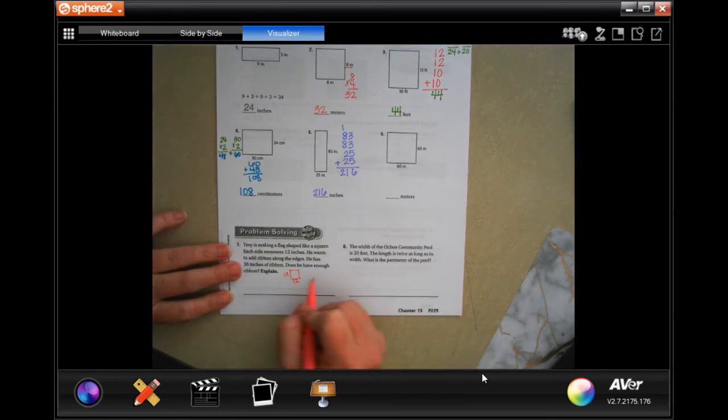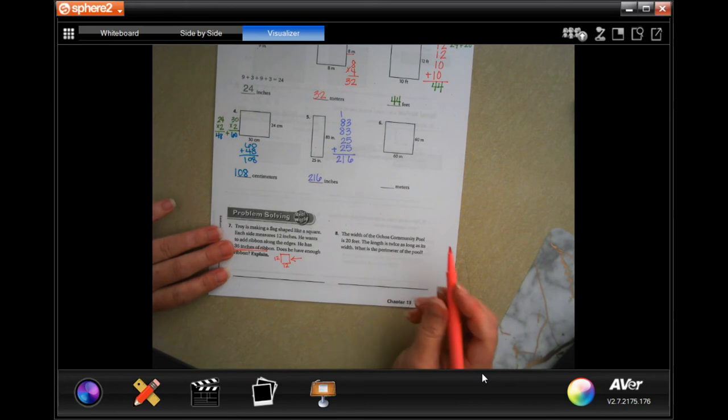So first, you need to find the perimeter of this. Then, decide if 36 inches is enough and then explain it. I'm going to let you guys do that one.